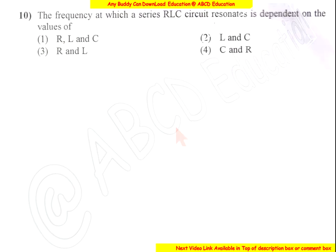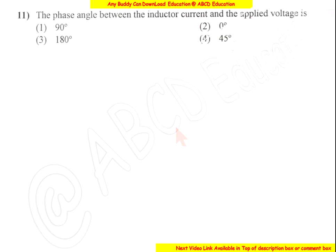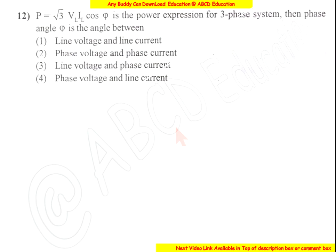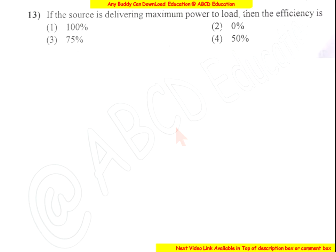The frequency at which a series RLC circuit resonates is dependent on the values of L and C. The phase angle between the inductor current and the applied voltage is 90 degrees, since inductor current lags by 90 degrees. For the three-phase power expression √3·VL·IL·cosφ, the phase angle φ is the angle between phase voltage and phase current.